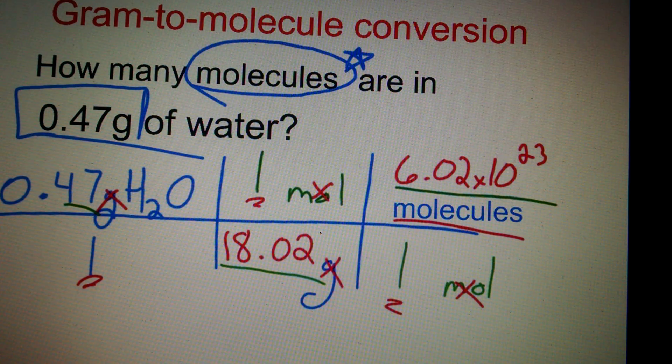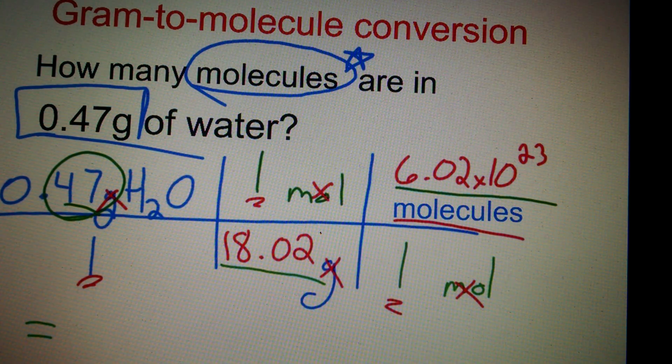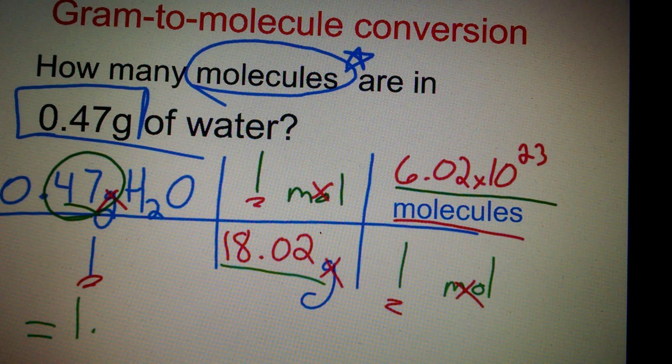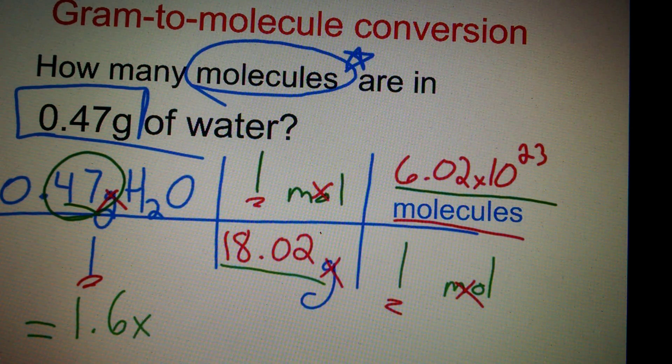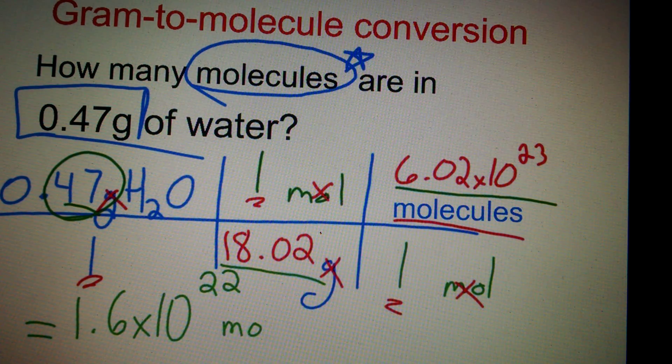Your answer should be with two significant figures, because 0.47 only has two sig figs. Not bad. We'll have 1.6 times 10 to the 22nd molecules.